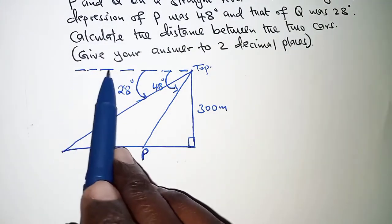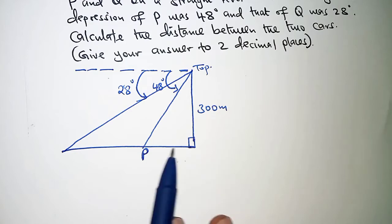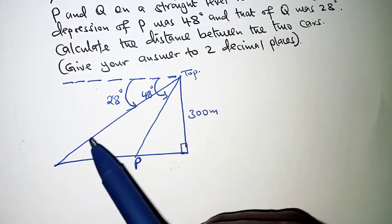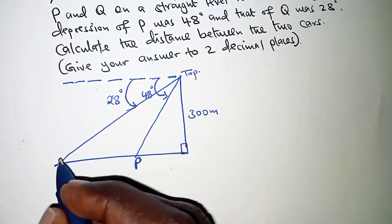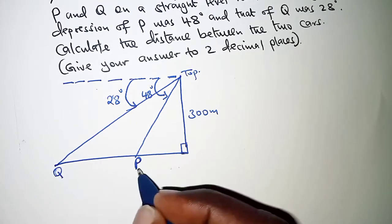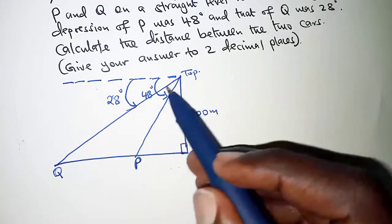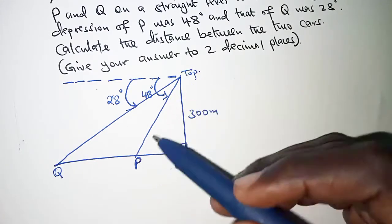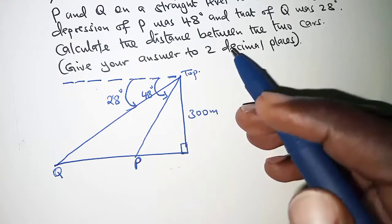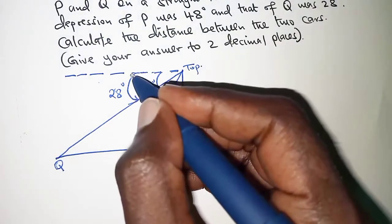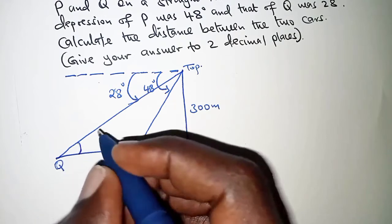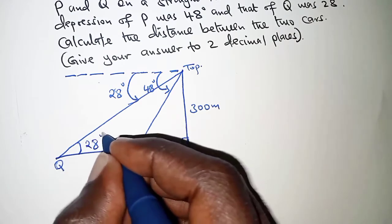So, remember this line here and the ground are horizontal and parallel. So, if we have this point as Q and here as P, then Q up to the top is a transversal line. And then, P up to the top is also another transversal line. So, if we have this angle here as 28 degrees, then we will also have this as 28 degrees.